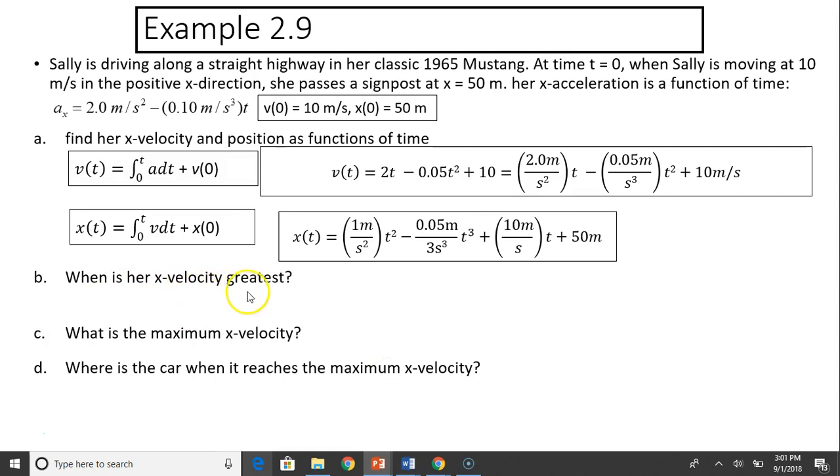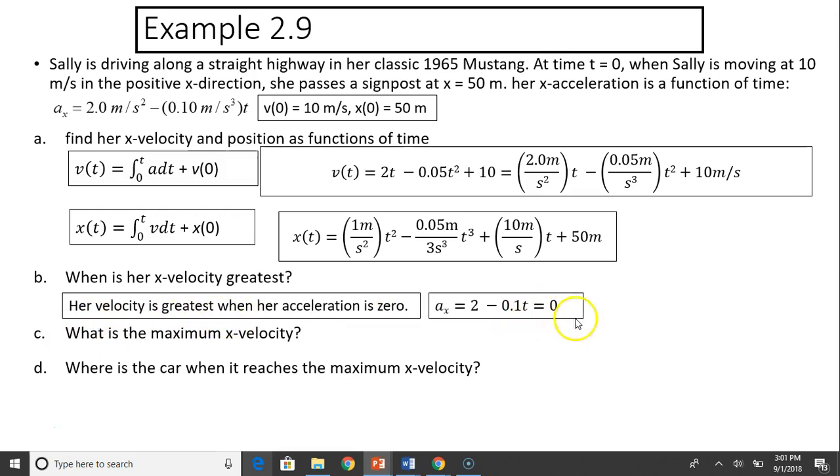When is her x velocity greatest? x velocity is greatest when acceleration is 0. Remember the greatest, you have that peak, so the slope has to be 0. So acceleration has to be 0. So you set acceleration equals to 0, solve for t. t equals 20 seconds. Next question is, what is the maximum velocity? Maximum velocity is velocity at 20 seconds. So you simply plug t equals 20 into this velocity expression. And you will get 30 meters per second.